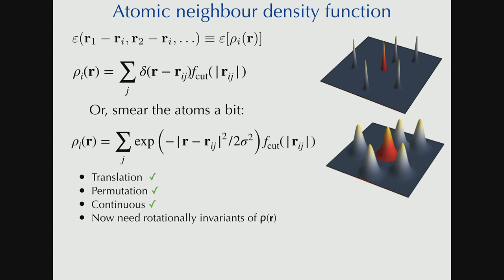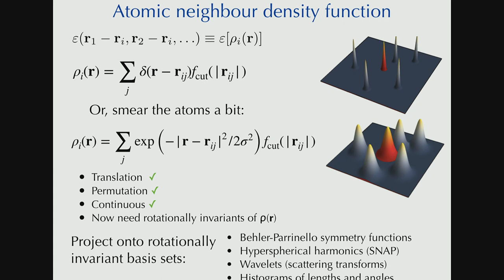And so, we have a representation that is translation invariant. It doesn't matter where my atom is. This rho of r function is centered on each atom. There's permutation invariance, because this sum doesn't care in which order I add up my neighbors. It's continuous, especially if I have a continuous cutoff function. But it's not rotation invariant. I like my atomic energy functions to not change when I rotate the entire system. And this function certainly isn't rotation invariant. And everybody solves that essentially by projecting this density onto rotation invariant basis sets.